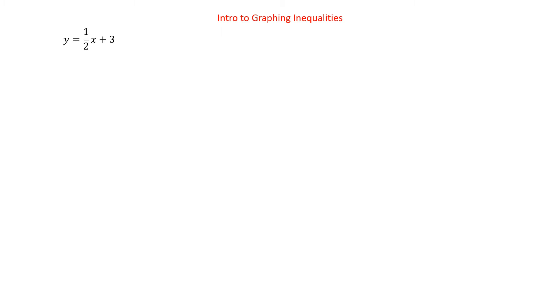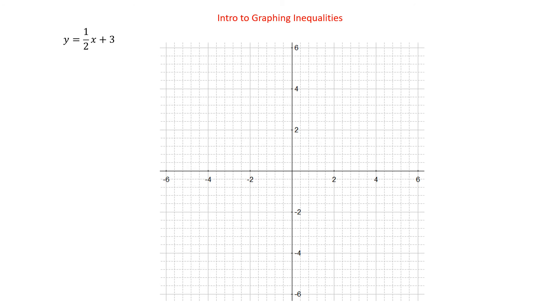We're going to look at how we can graph inequalities. The nice thing is that inequalities are almost identical to graphing lines — the stuff we've been working with with lines is the same thing, with just two extra things to look at. So if we were to graph a line, we have y equals one-half x plus 3. We start at our y-intercept of 3, and then go up 1 over 2 — up to 4, then over 2, up to 5 over to 4.